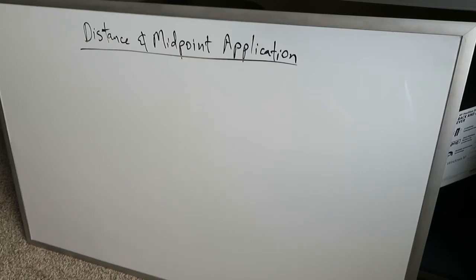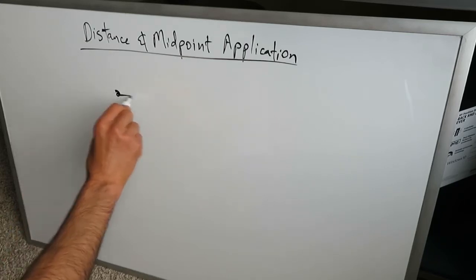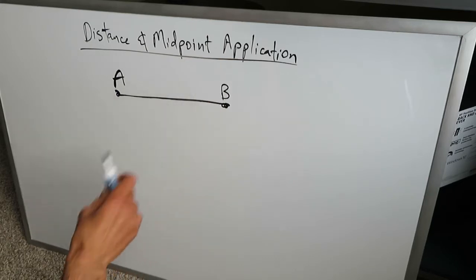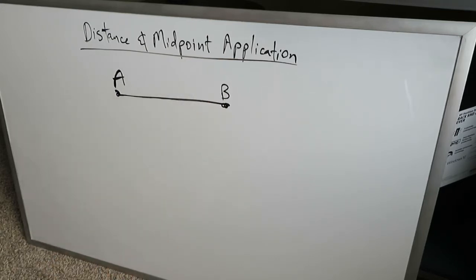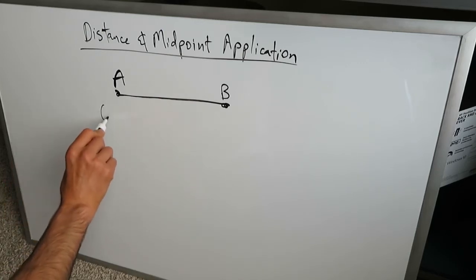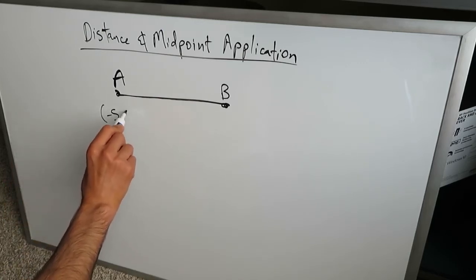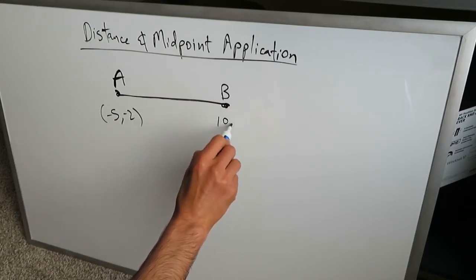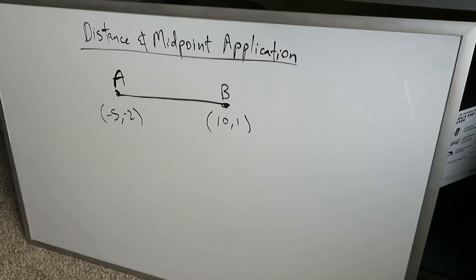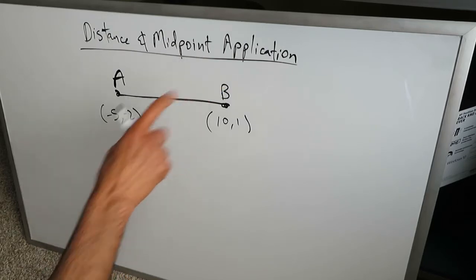A segment is a line which has a starting point and an end point. This right here is segment AB, and it could be in any direction — up and down, right and left, or diagonal. Here I'm drawing it as a horizontal line. If the coordinate point for A is hypothetically minus 5 comma minus 2, and B is 10 comma 1, you might be familiar with calculating the distance and the midpoint, but let's quickly review with this example before I present two applications.